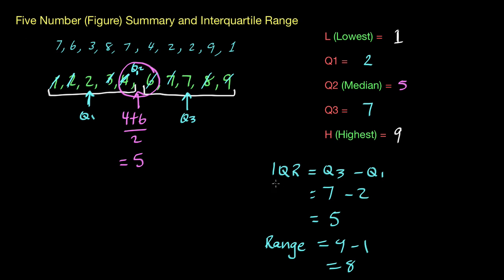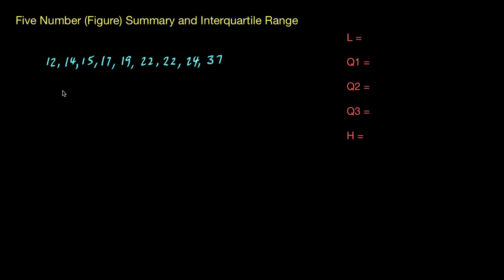Now we find the five number summary for this second data set. First of all, everything needs to be in ascending order — we've got 12 right through to 37 and we're all in order, so we're fine. The lowest value L is 12, and H, the highest value, is 37.